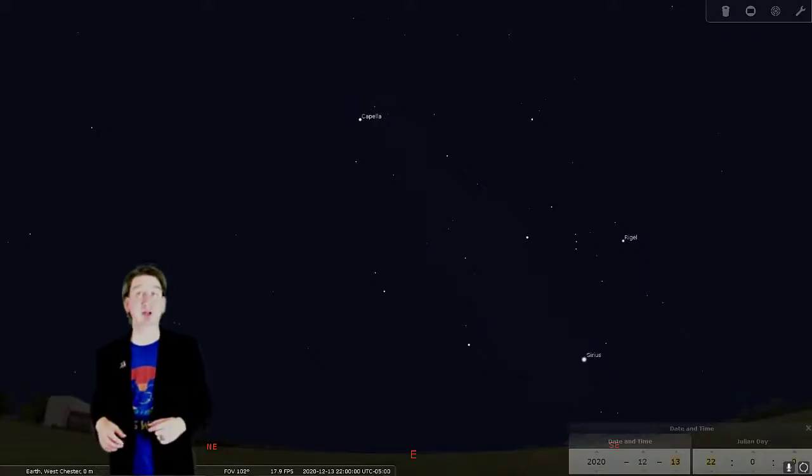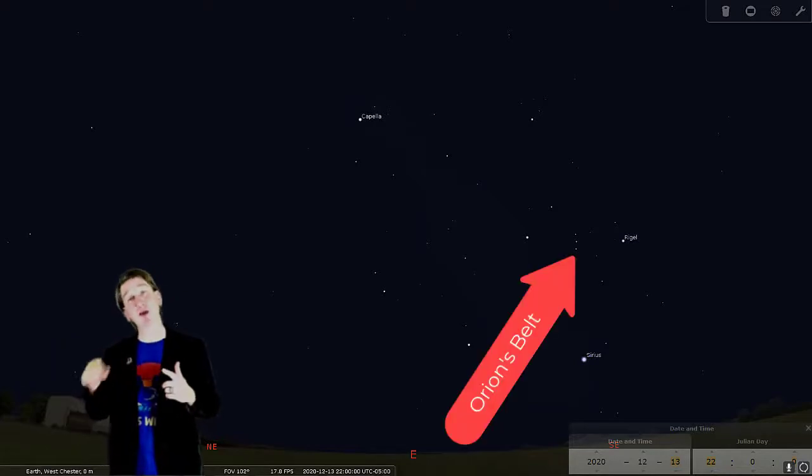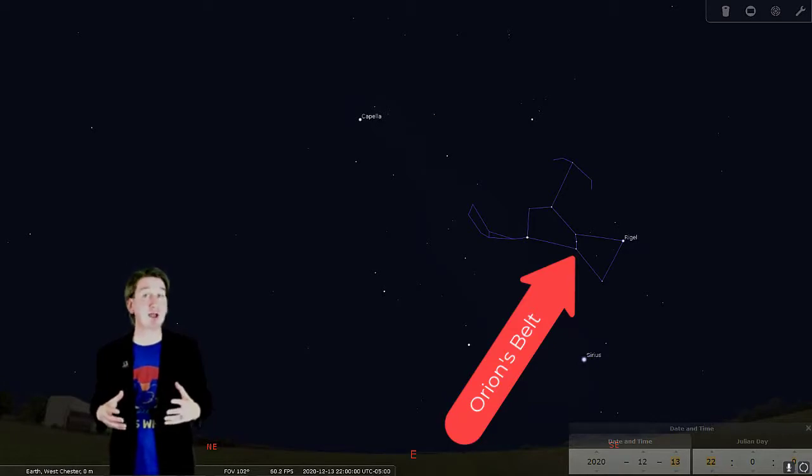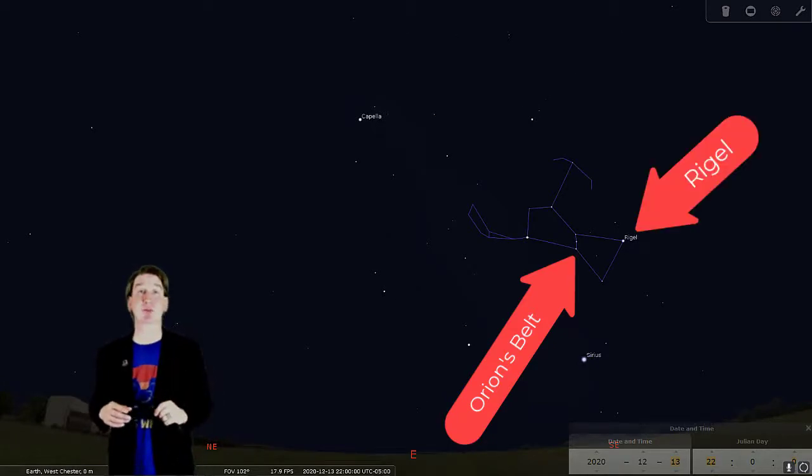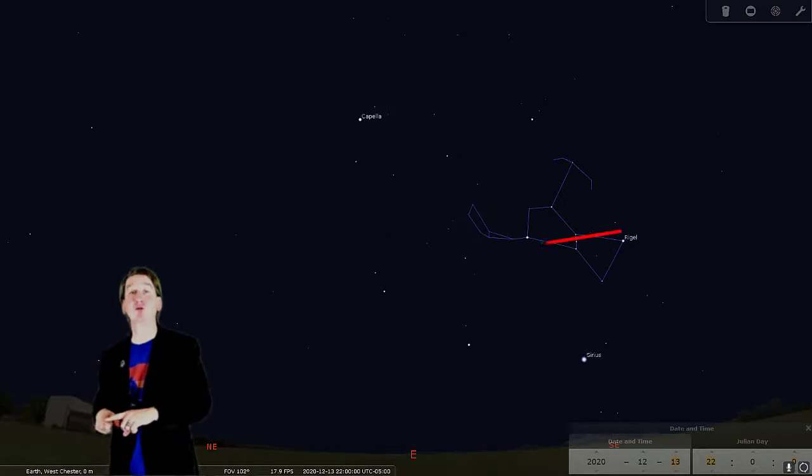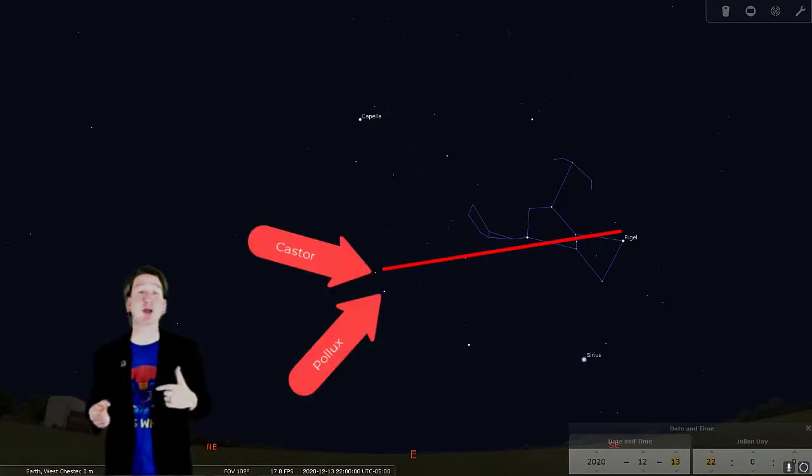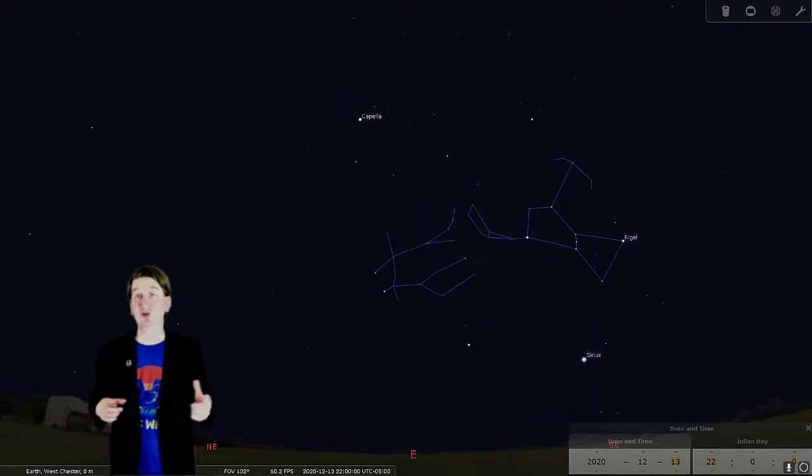This shower is called the Geminid shower because the meteors will generally appear to come from the region of the sky where you find the constellation Gemini. To locate the constellation Gemini, it is best to first look for Orion the Hunter and the three bright stars that make up his belt. Down and to the right of the belt is a bright whitish blue star named Rigel, and up and to the left of the belt is a bright reddish star called Betelgeuse. If you draw a line from Rigel through the belt to Betelgeuse and continue going straight, you will run into the two bright stars Castor and Pollux, which are the heads of the twin brothers that make up the constellation Gemini. This is generally the direction you want to face when looking for meteors from the Geminid meteor shower.